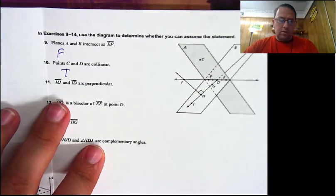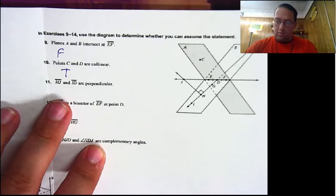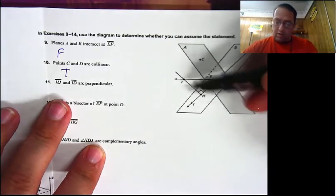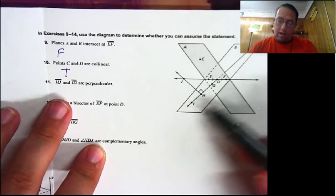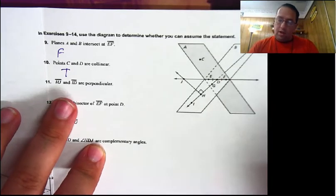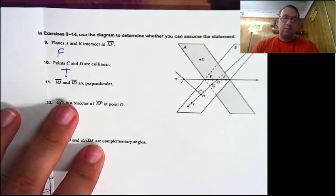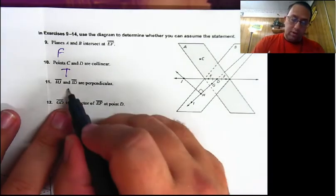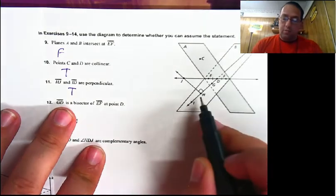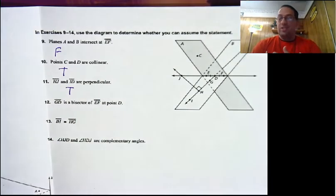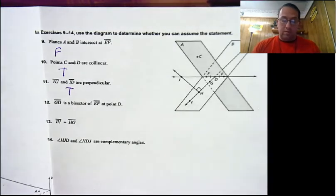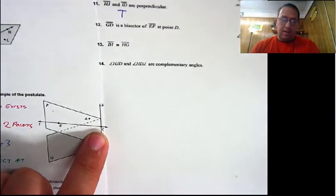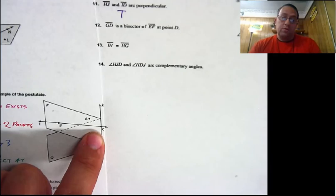Segment HJ and segment ID are perpendicular. HJ is just the segment portion here, and ID is here to there. Are those perpendicular — can we assume that to be true? Yes, actually we can, because we have the little right angle marking right there. So this is going to be true because it is marked that way. Could we just assume it if it didn't have the marking? No. If you don't have the marking, maybe it is, maybe it's not. Like over here, line K and line L look pretty close to perpendicular, but I couldn't assume it — there's no marking there.